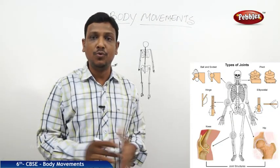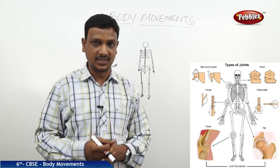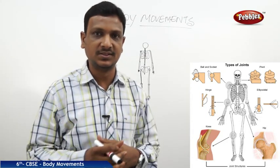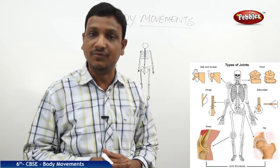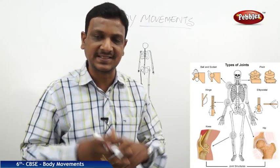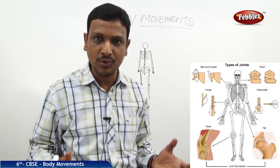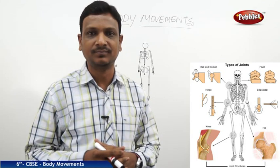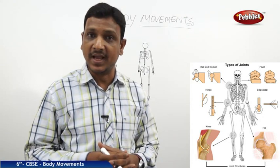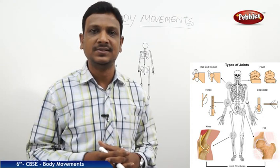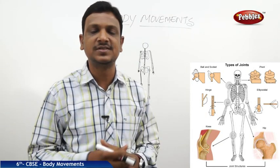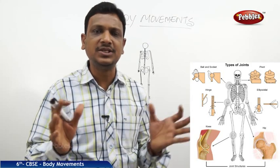Now let us talk about movements in the human body. In our body we have movements and we are able to perform so many things. Have you ever seen the Olympics? Athletes perform different tasks using their limbs, hands and legs. The human body has a very flexible design — we have so many joints that enable movement in different directions, and by that we can achieve so many tasks.